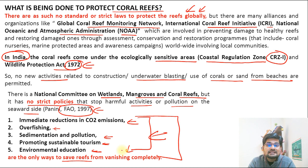Recommended steps include immediate reductions in CO2 emissions, stopping overfishing, reducing sedimentation and pollution, and promoting sustainable tourism and environmental education. These are the ways to conserve coral reefs and reduce our impact — the only way to save reefs from vanishing completely by 2050 according to Clive Wilkinson's report. In sessions to come, more topics of oceanography will be covered — stay tuned and stay safe.